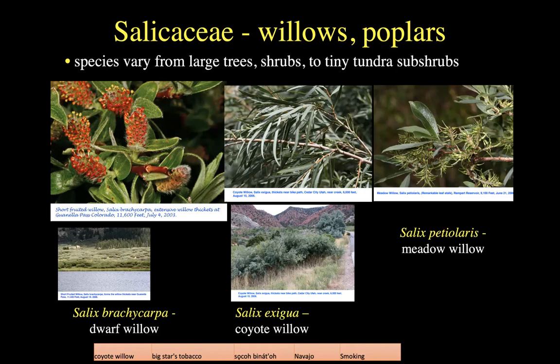There are indigenous plant names and uses from the Navajo related to the coyote willow, which is in fact smoked. Some of our native willows really differ in leaf shape, so there are a lot of vegetative features you have to get comfortable with to key out a willow. I hate keying willows.